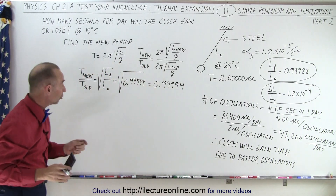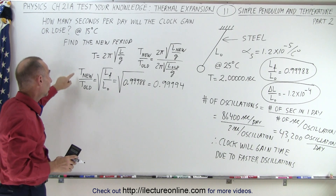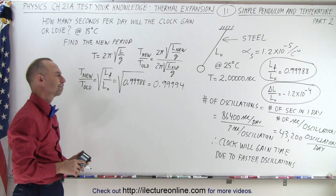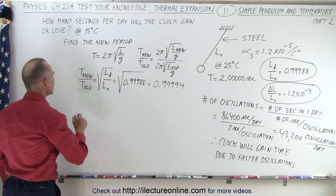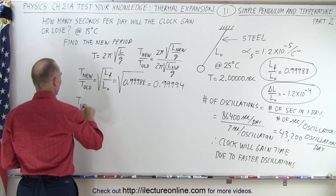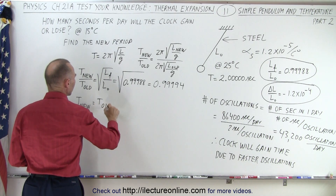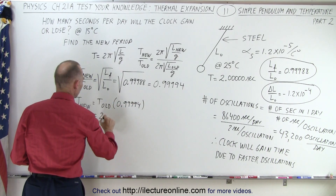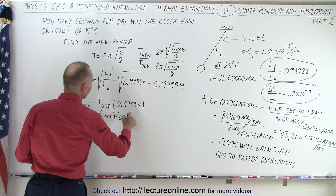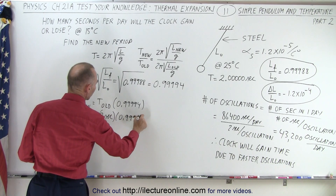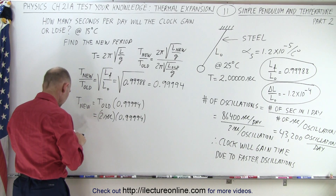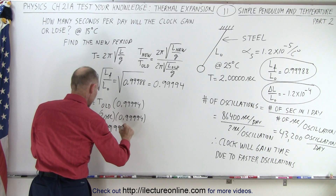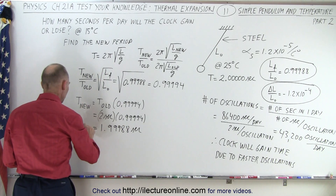So that is the relationship between the old period and the new period. The new period will be equal to the old period times 0.99994, which is 2 seconds times 0.99994, giving us 1.999988 seconds. So now we have the new period of our pendulum.